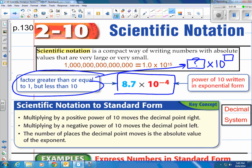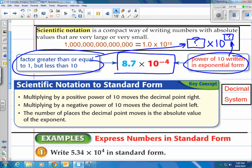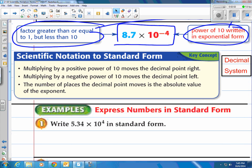And then the power right here, it's gonna be an integer, so it's gonna be a positive or negative whole number. If you look at what they stated here: when you multiply by a positive power of 10, that moves the decimal to the right. When multiplying by a negative power of 10, that moves the decimal to the left. And the number of places the decimal point moves is the absolute value of the exponent.